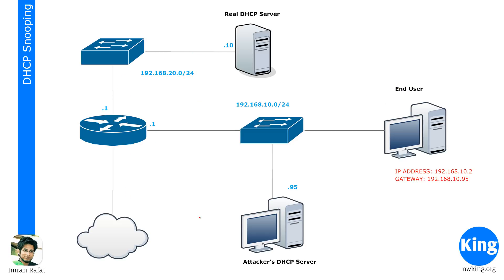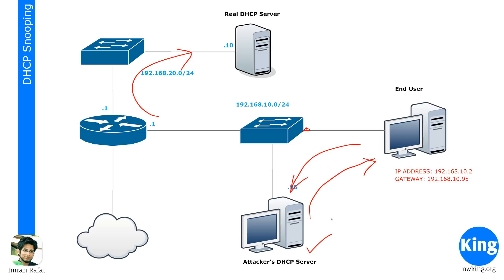But let's assume that in the network there is a rogue attacker who has installed a DHCP server on their computer. When an end user comes in and sends a broadcast message, the relay agent would forward that to the DHCP server. But this rogue DHCP server, which is already in the network, would listen to that broadcast and send an offer. The DHCP offer would come from the rogue server, and because the end user has already received an offer, they would accept it and request that IP address.